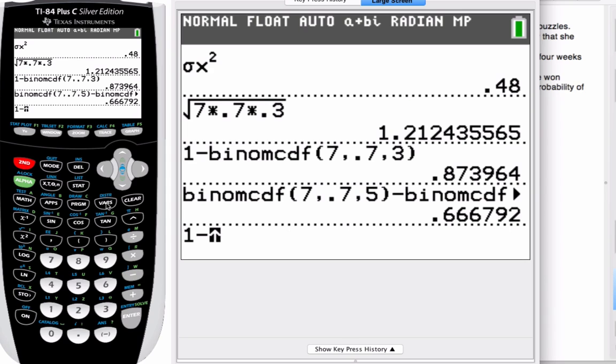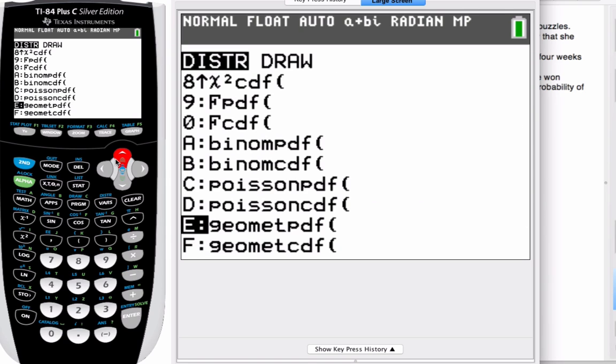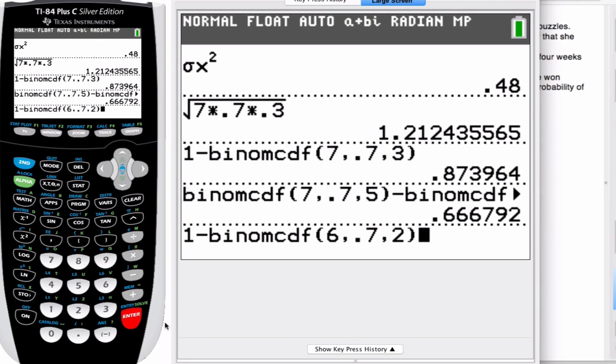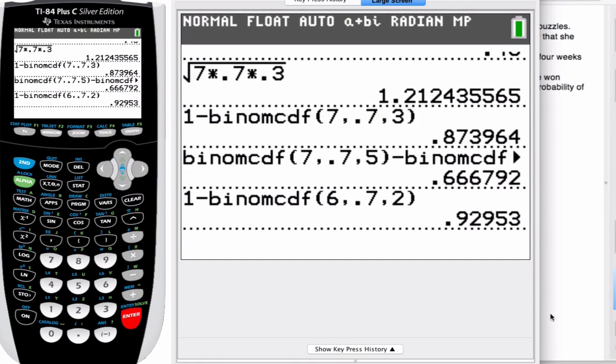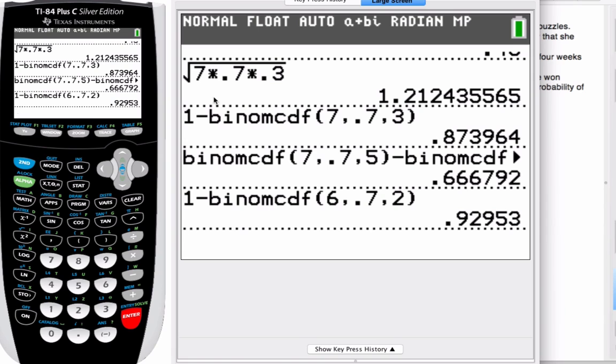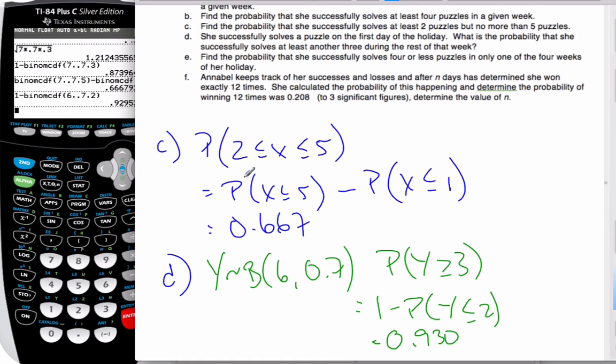So I'm going to go through and calculate that. One minus binomial. This trial is six, though, now. The X value is two. Enter 0.930. Now, as I do this on the calculator, you should be pausing this and doing these strokes yourself. In order to get proficient at doing your calculator, you have to practice it.